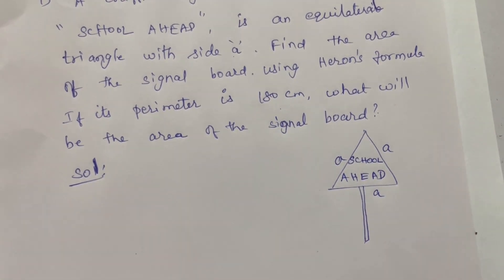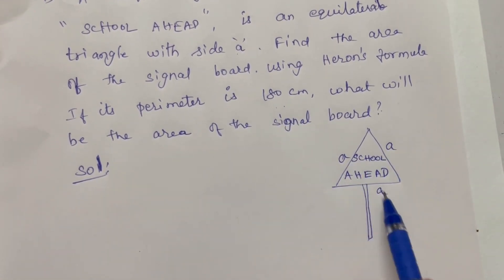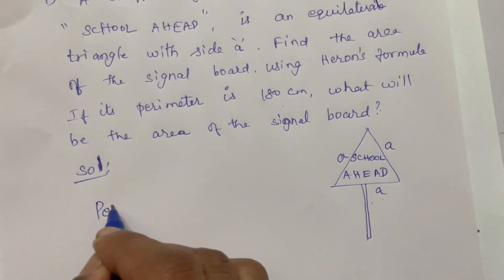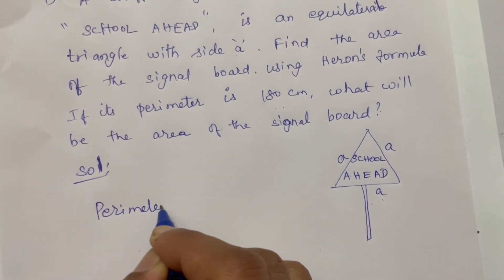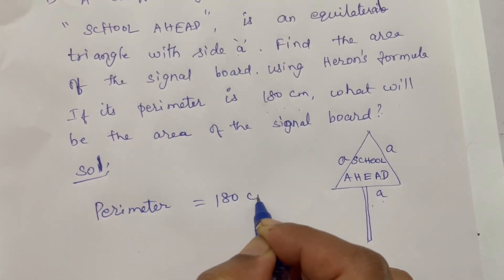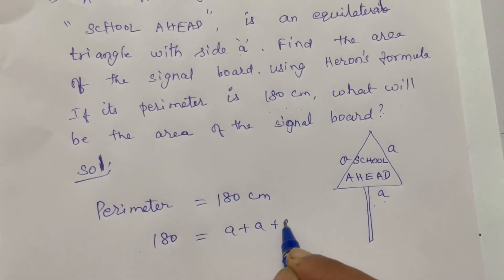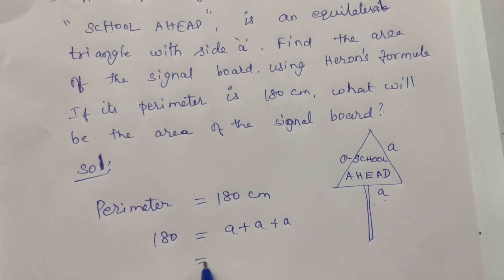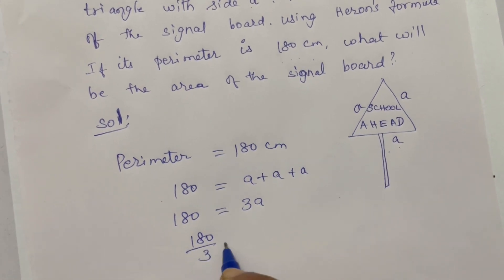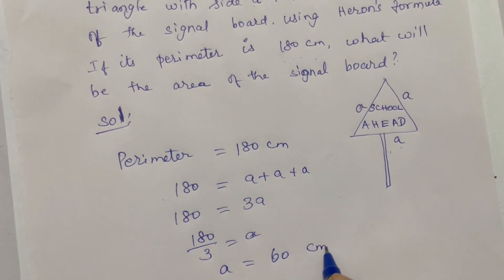Perimeter is 180 cm. We need to find each side length. Because it is an equilateral triangle, perimeter equals 3A. So 180 divided by 3 equals A, giving A equal to 60 cm.